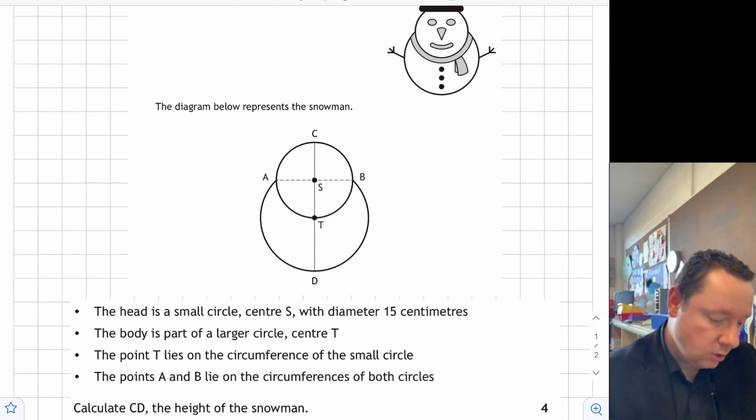we're given and see what we can calculate. So the first bit of information I'm going to use is the fact that the head is a smaller circle, S, with diameter of 15 centimeters. So if I get a pen and draw that in, there's a diameter there and we know that that is 15 centimeters.